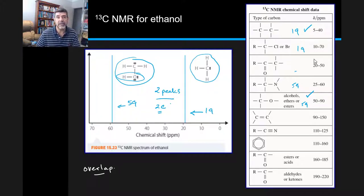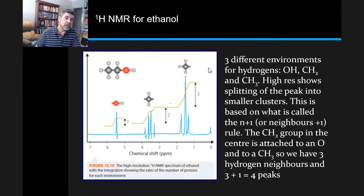One extra piece of information that we can use to help us to try and identify what's going on here is to also look at the proton NMR or the hydrogen one NMR for ethanol. And we can see that on the next slide. So here is the proton NMR for ethanol.